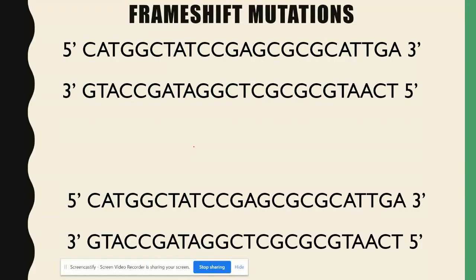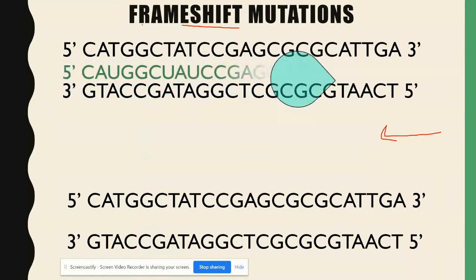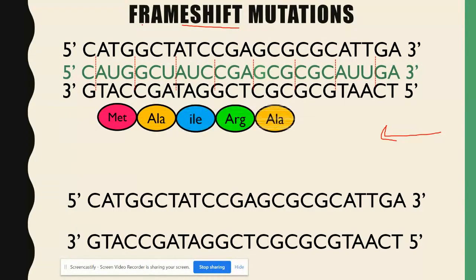Now let's look at our other kinds of DNA mutations — these are called frame shift mutations. The way to think about it is that we're shifting the whole reading frame — how you divide the mRNA into codons is shifted. In frame shift mutations you have either insertions, where you add nucleotides, or deletions. Let's look at our original strand of DNA and mRNA, divide it into codons, and see what polypeptide results.